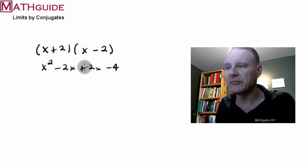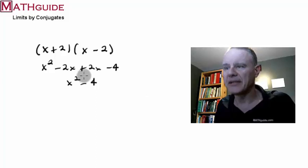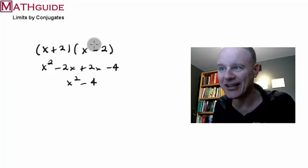What you'll notice is these middle two terms cancel because they're opposites of each other. And you get this. That's called the difference of two squares. Yes, the difference of two squares factors to conjugates.